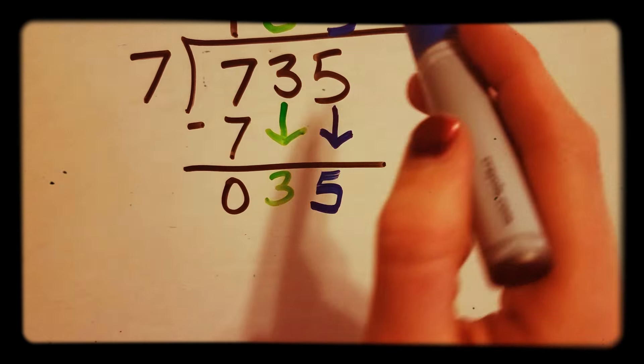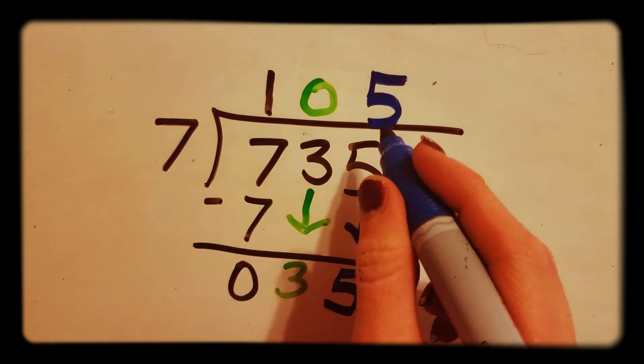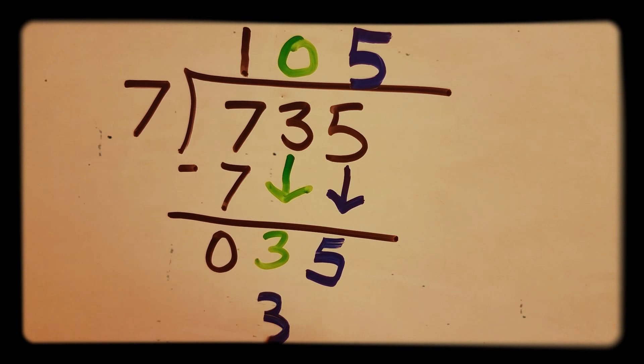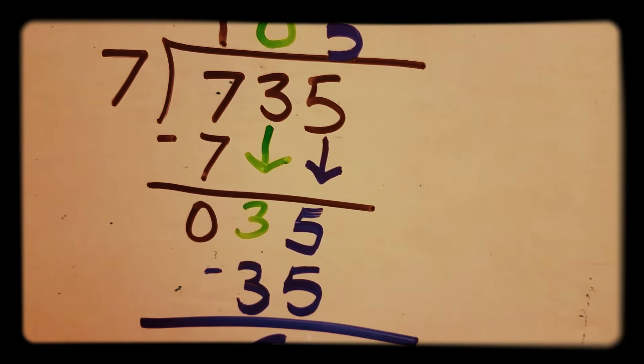Now we need to do 7 times 5. 7 times 5 is 35. 35 minus 35 is 0.